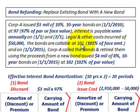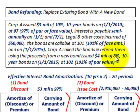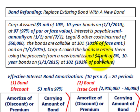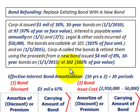The bonds are callable at 101% of the face amount. On 1-1-2015, five years later, Corporation A called these bonds and retired them using the proceeds from a new bond issue of $4 million at 8%, 10-year bonds on 1-1-2015 at 102% of par. So they issued $4 million worth of new bonds and used that money to repurchase the $3 million worth of outstanding bonds callable at 101%.